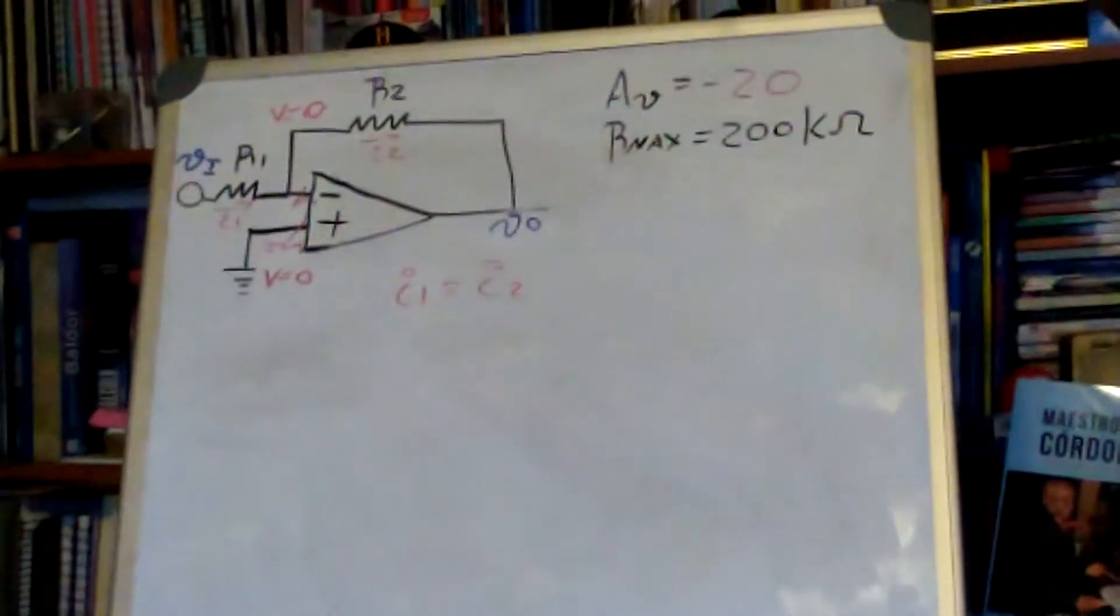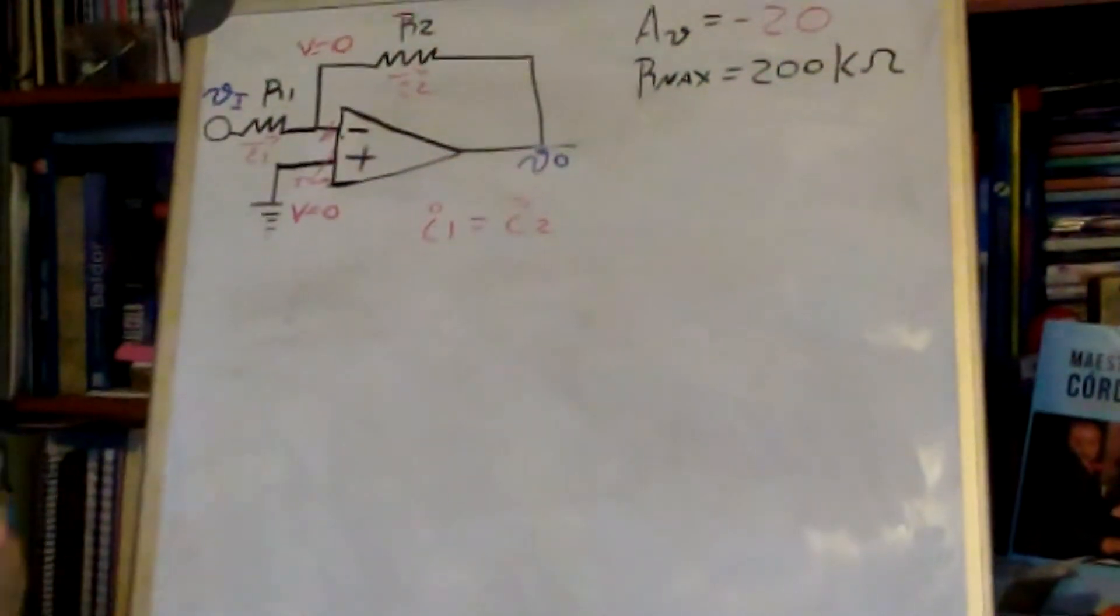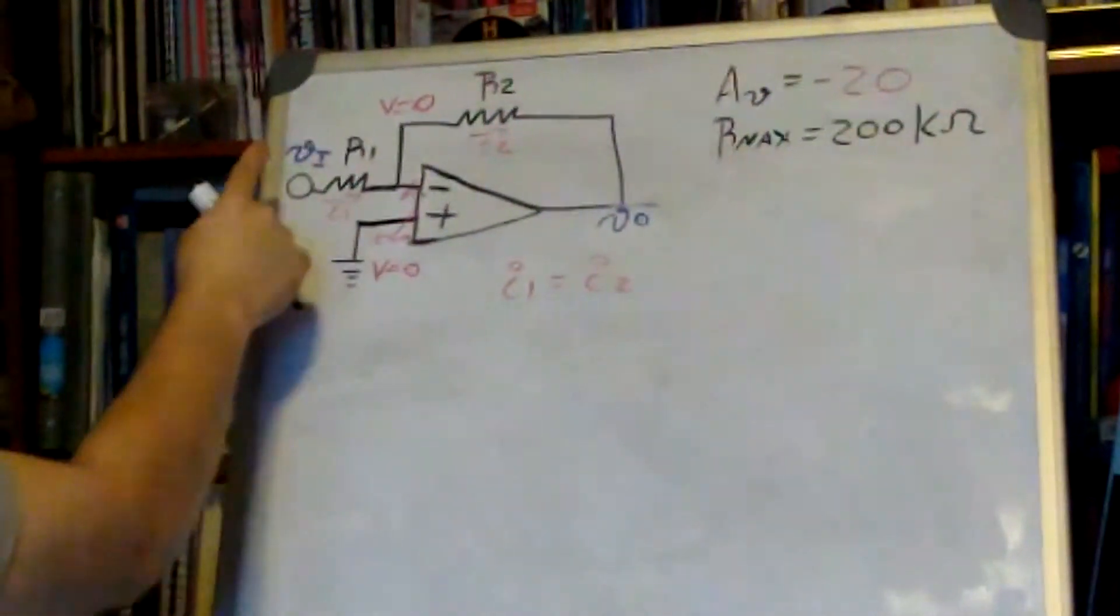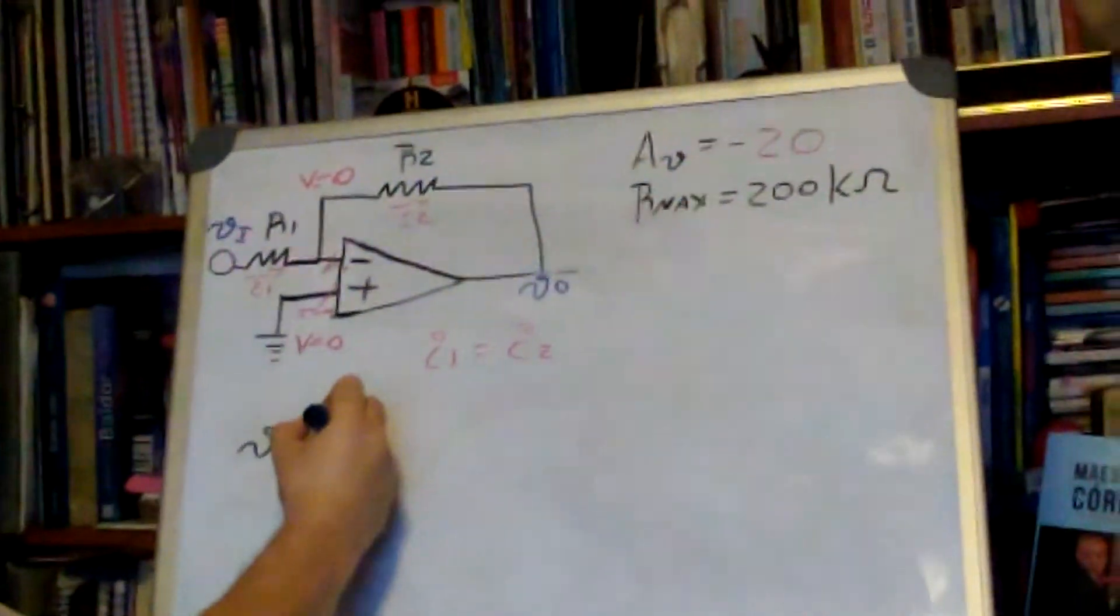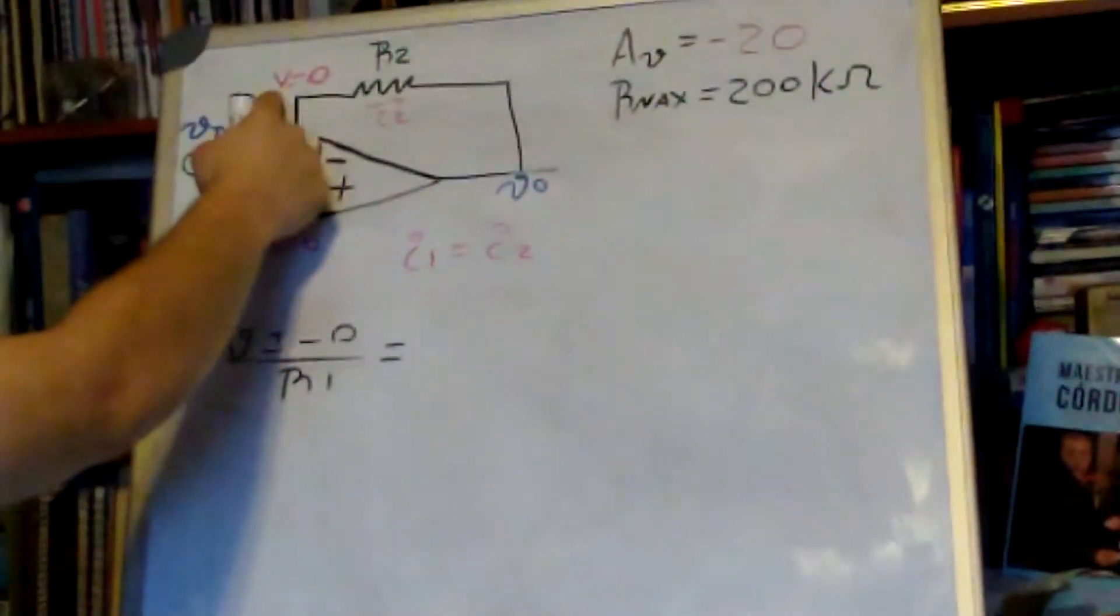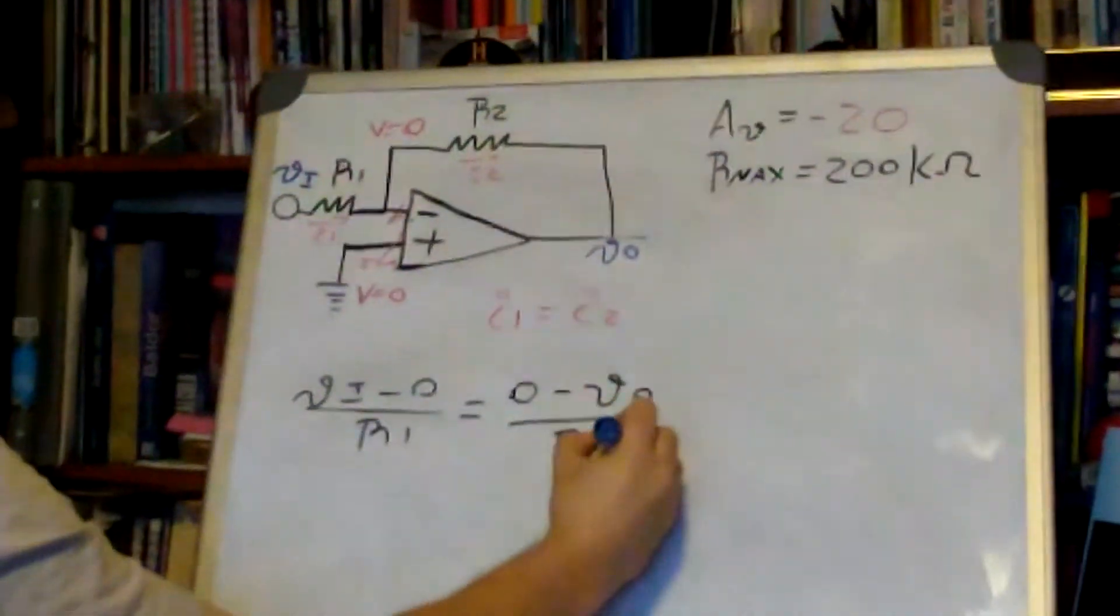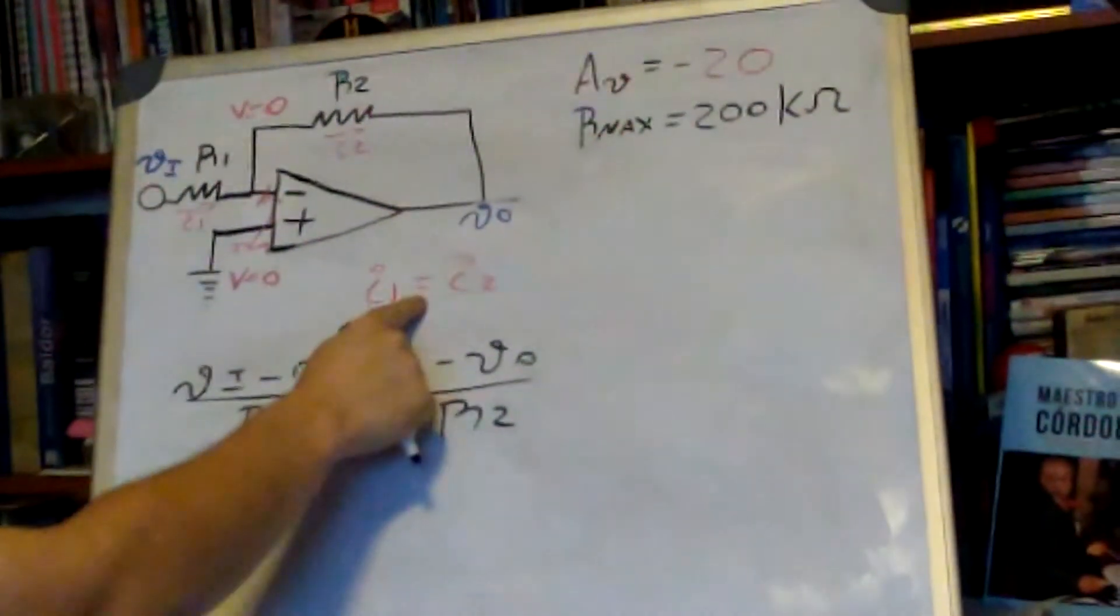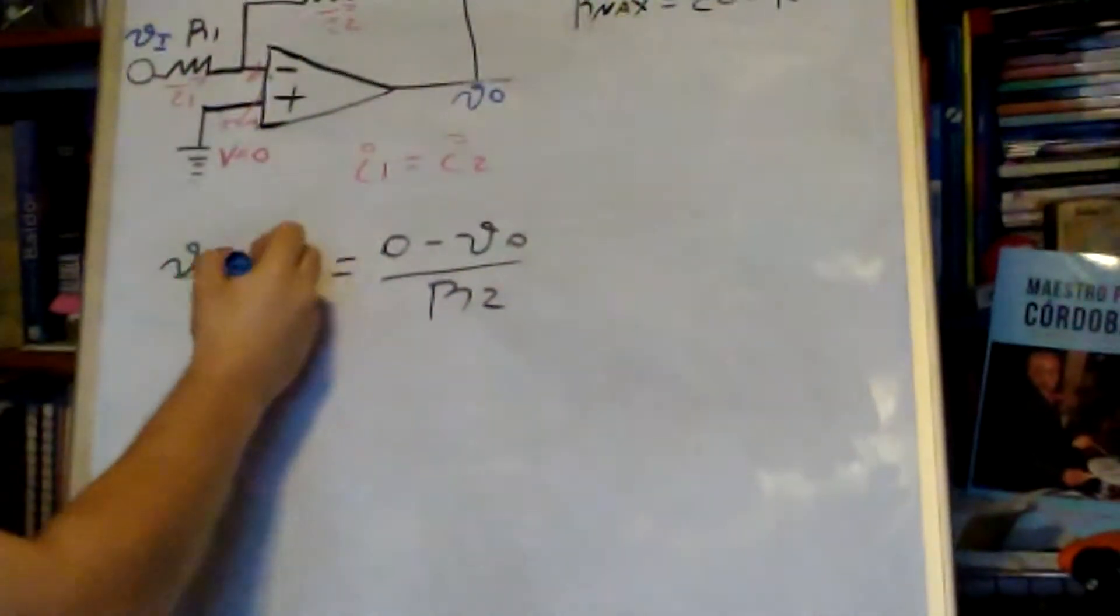Now I'm going to find the equations for this node. So Vi minus zero over R1 is equal to zero minus Vo over R2. Essentially I am saying the same thing: this current is equal to this current, so we say Vi over R1 is equal to minus Vo over R2.